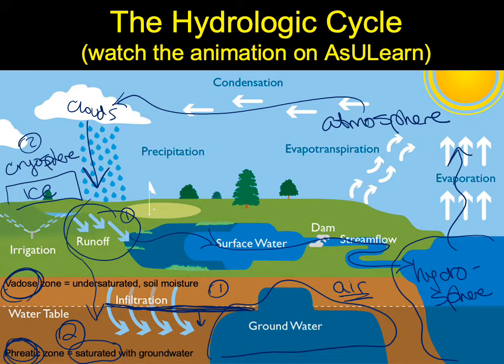Below the water table, the entire ground surface is saturated with respect to groundwater — very little to no air remains between sedimentary particles, and pretty much all the space between grains is filled with water. I'd encourage you to watch that animation on As You Learn, then come back and we can continue talking about the hydrologic cycle and groundwater.